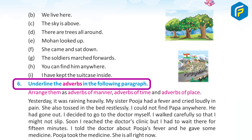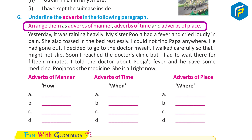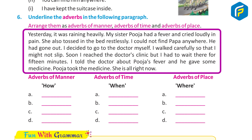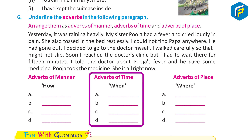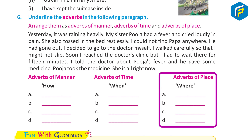6. Underline the adverbs in the following paragraph and arrange them as adverbs of manner, adverbs of time, and adverbs of place. Yesterday it was raining heavily. My sister Pooja had a fever and cried loudly in pain. She also tossed in the bed restlessly. I could not find Papa anywhere. He had gone out. I decided to go out the door myself. I walked carefully so that I might not slip. Soon I reached the doctor's clinic. But I had to wait there for 15 minutes. I told the doctor about Pooja's fever and he gave some medicine. Pooja took the medicine. She is alright now. Adverbs of manner: heavily, loudly, restlessly, carefully. Adverbs of time: yesterday, soon, 15 minutes, now. Adverbs of place: anywhere, out, doctor's clinic.